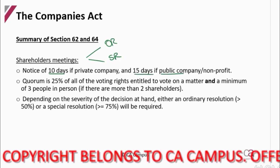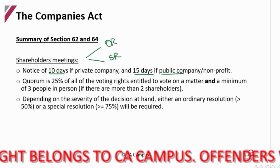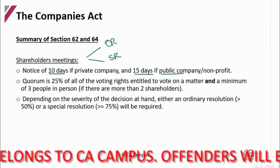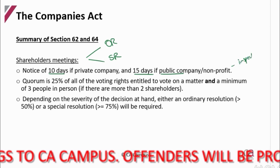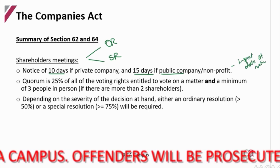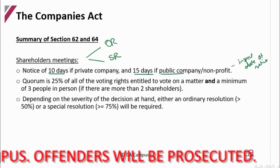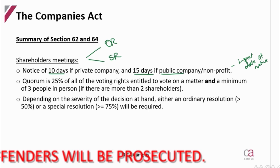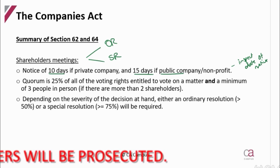When you are going to audit a decision that has to be made, you're going to want to inspect the date of the notice to make sure that it was within these two criteria — 10 days for private, 15 days for public. Then we said they have to have a quorum, which is a number of people present for this meeting to actually be considered a live meeting.